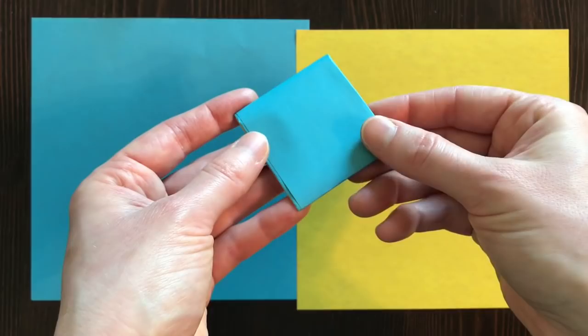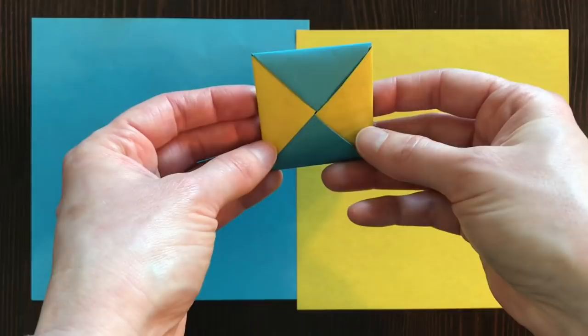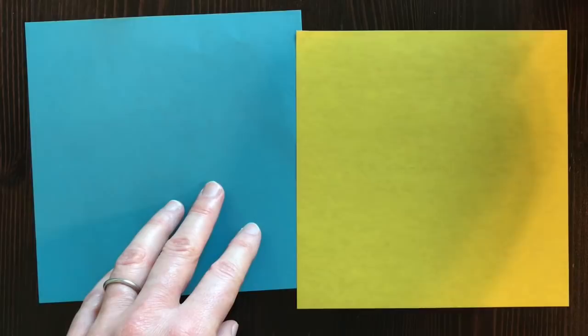This is the finished product that we're going to be making today. As you can see, mine is blue on the back, and then it has blue and yellow triangles on the front.